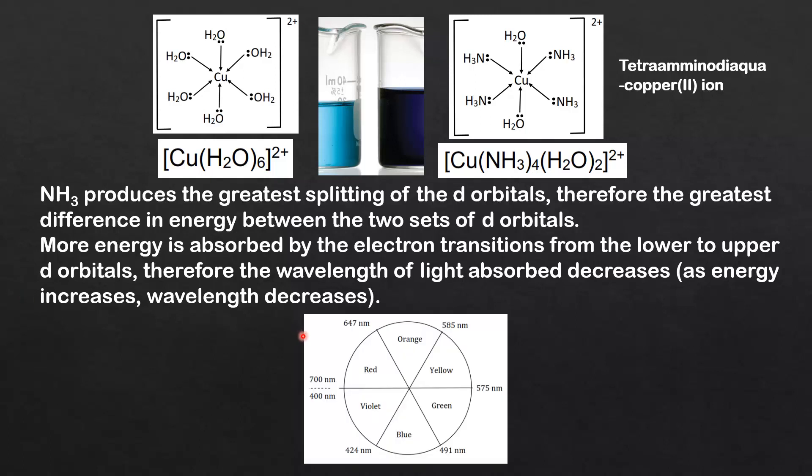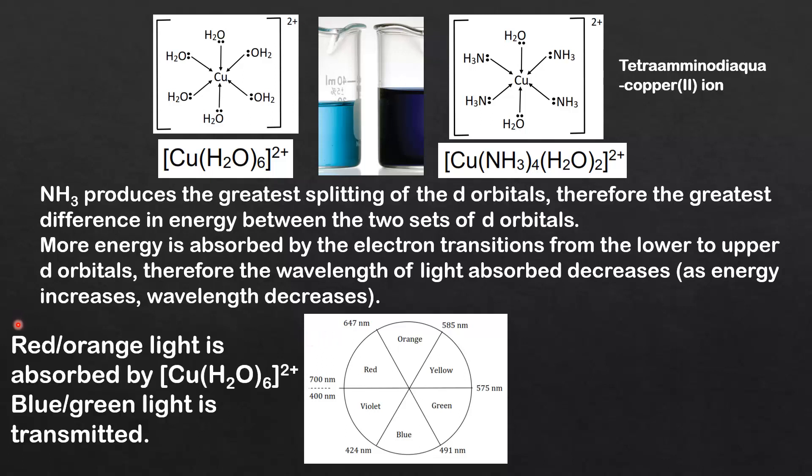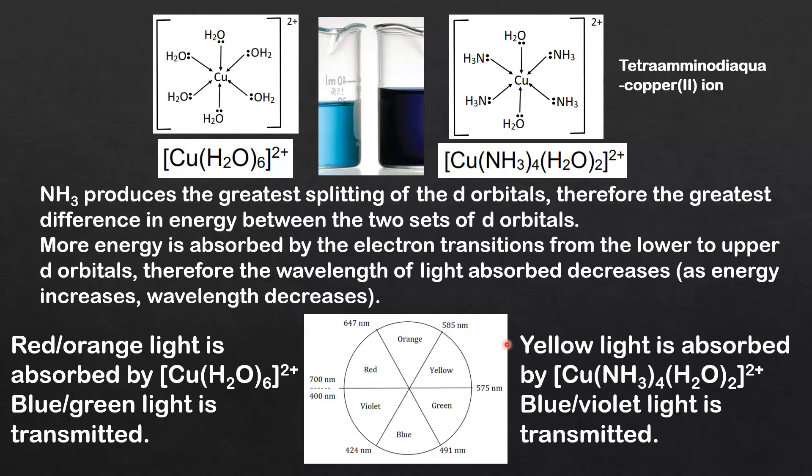Let's use a color wheel to compare the wavelengths of light being absorbed and transmitted by each complex ion. Starting with the complex ion on the left: red orange light is absorbed by the hexa-aqua-copper-2 ion and blue green light is transmitted.